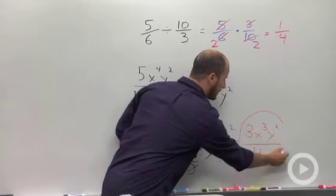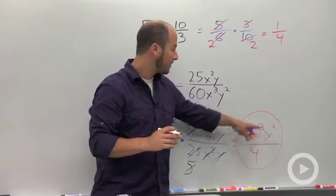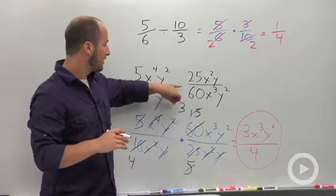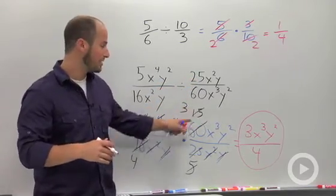And then just checking to make sure that I didn't miss anything, 3x cubed y squared over 4 can't cancel. So what we were able to do is by flipping our divisor, multiplying, canceling anything that can cancel, we were able to simplify this up.